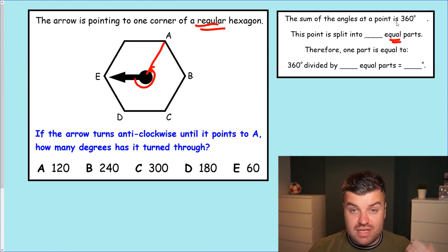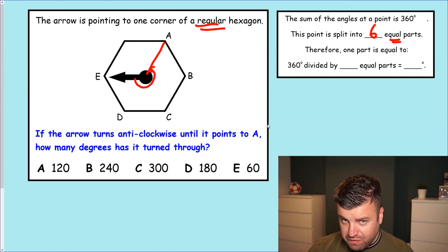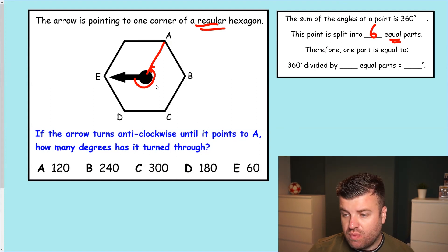The sum of the angles around the point is 360 degrees. The point is split into six equal parts because you can count the corners around a hexagon. Therefore, one part, which we're going to just put in here with a dotted line, this turn here for the arrow, one part is 360 divided by those six equal parts. 36 divided by 6 is 6, 10 times bigger. Each turn here is 60 degrees.